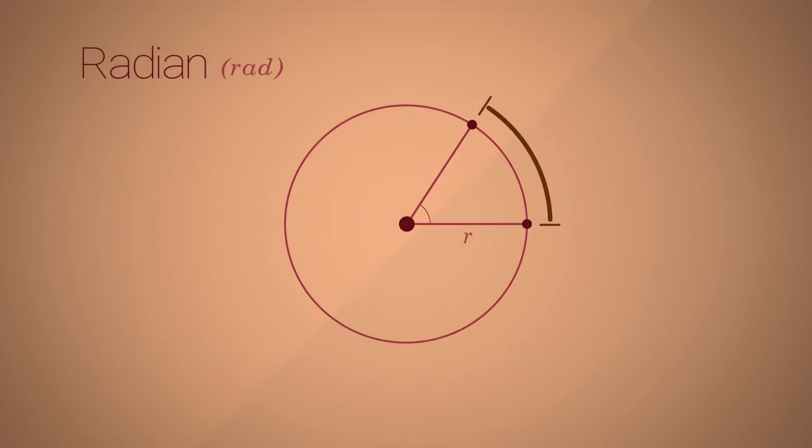The radian angle of a full circle is the length of the full circle, which is just the circumference of the circle. The circumference of the circle is given by the formula 2πr. We know that the radius for a unit circle is 1, so the radian angle of a full circle is 2π.